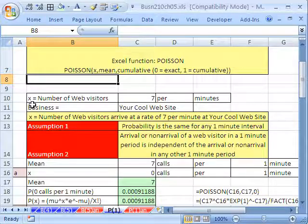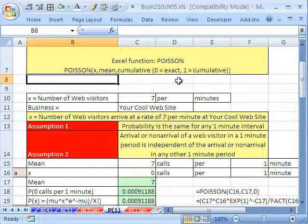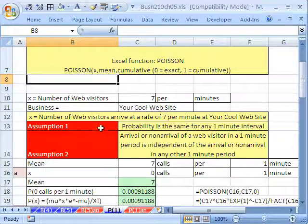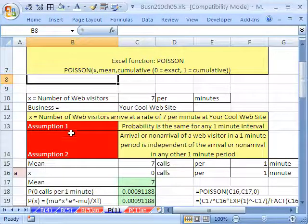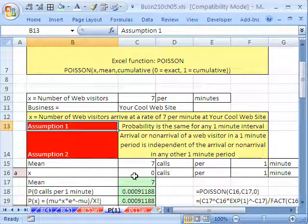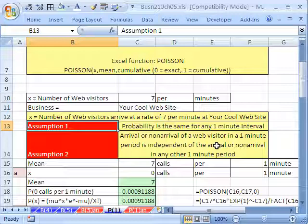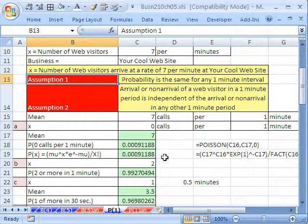Here's our example. x is going to be equal to the number of web visitors to your cool website. Seven per minute is the average from past data. So x, number of web visitors arrive at a rate of seven per minute at your cool website. Now, we've got to check our two assumptions. Assumption one, probability is the same for any one minute interval. We'll assume that it is. And assumption number two, the arrival or non-arrival of a web visitor in a one minute period is independent of the arrival or non-arrival of any other one minute period.